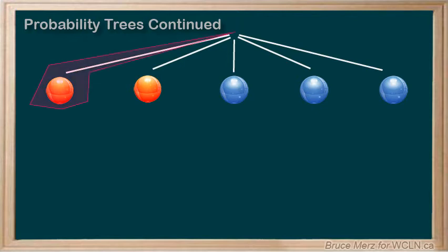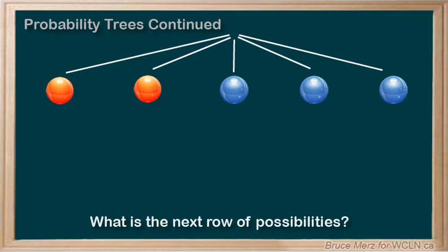So, let's look at the first branch there, where one of the red marbles is selected. What do you think are the next row of possibilities? Actually, why don't you try it? Pause the video to do that, and then click play to resume when you're ready.